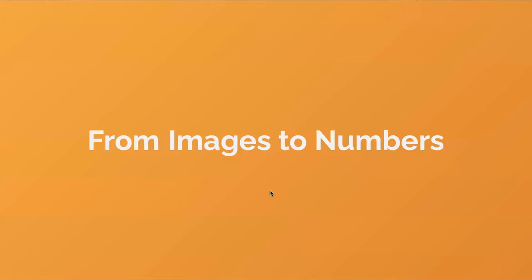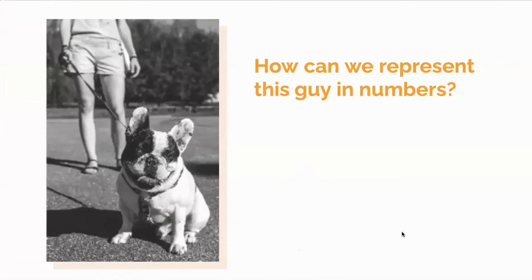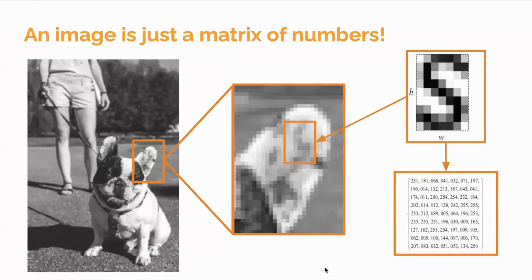Now we'll go into more specifics of how we go from images to numbers. In natural language processing there's a big problem with turning language into something you can give a neural network. In the context of images it's actually not as bad — they come kind of pre-wrapped in a form that works well for us. Images are represented by converting pixels into numbers — a matrix of pixels — as several of you correctly noted.